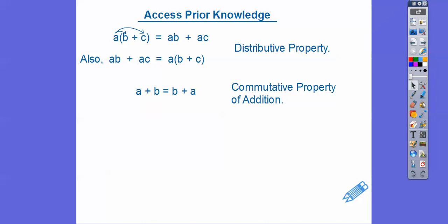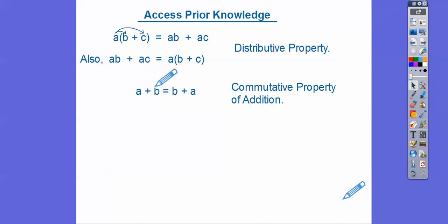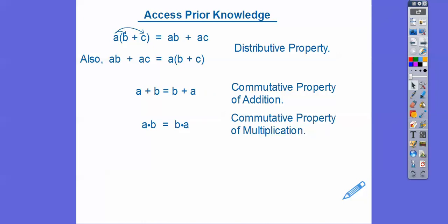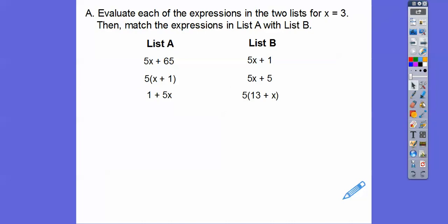The commutative property is, for example, a plus b is equal to b plus a. What they're doing is commuting around the addition sign — like when I drive to work, I commute to work; these guys are commuting around the addition sign. And then we have the commutative property of multiplication — same thing, they're commuting around the multiplication sign.